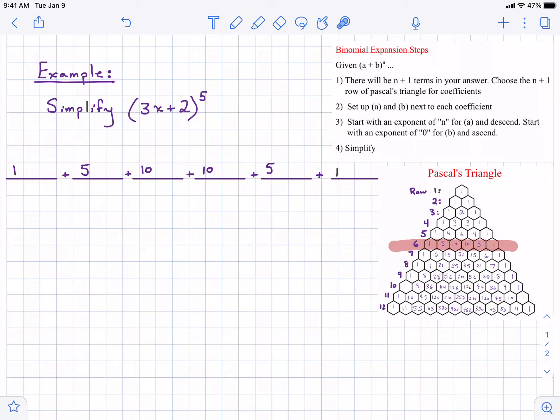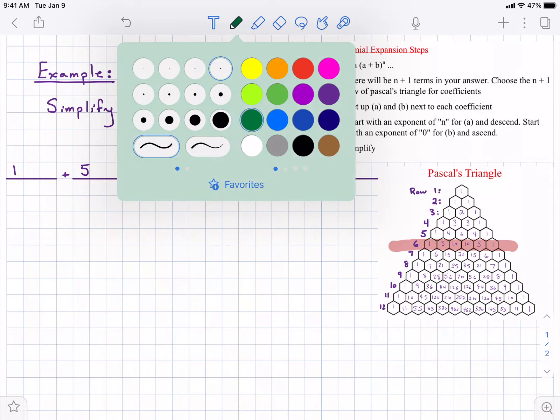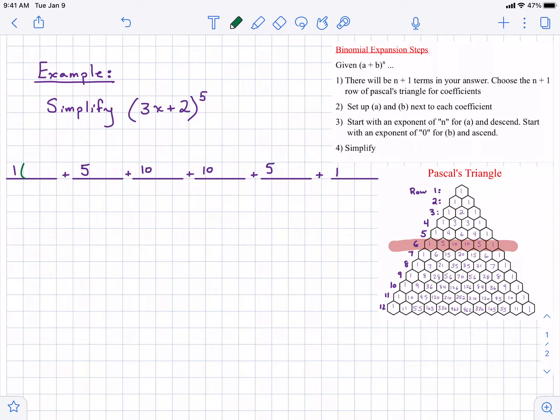Next, our terms that are in our binomial - the two terms, 3x and 2 - we're going to put those on each platform as well. So 3x separated. I should note, so each term goes on each platform.